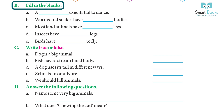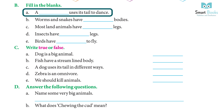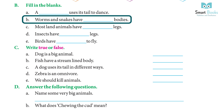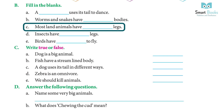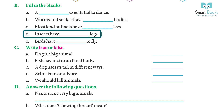Fill in the blanks. A) A peacock uses its tail to dance. B) Worms and snakes have elongated bodies. C) Most land animals have four legs. D) Insects have six legs. E) Birds have wings to fly.